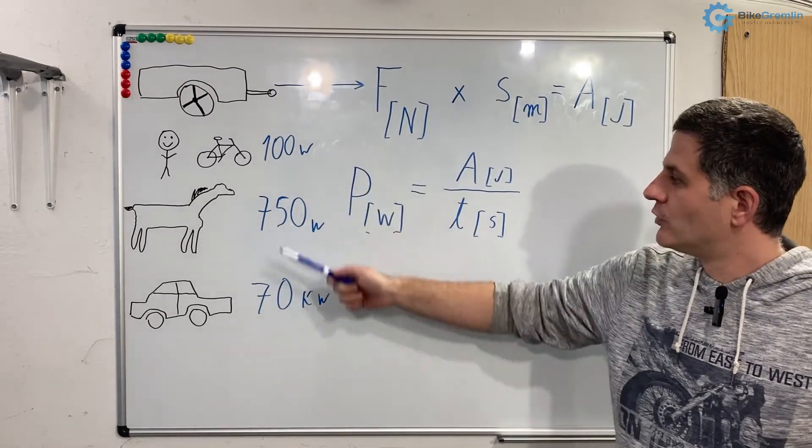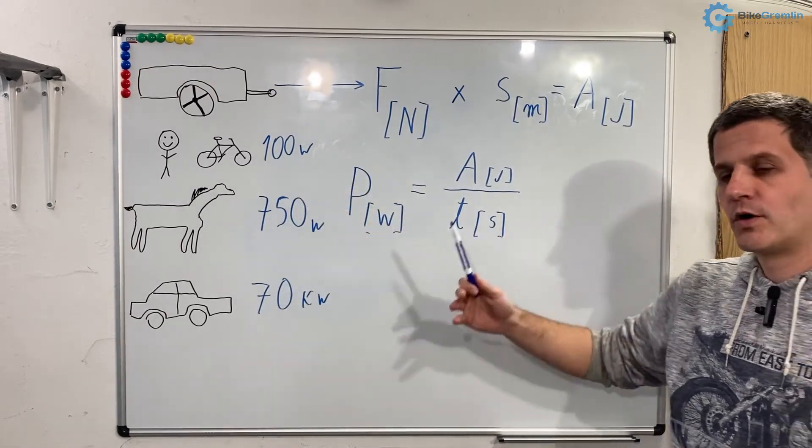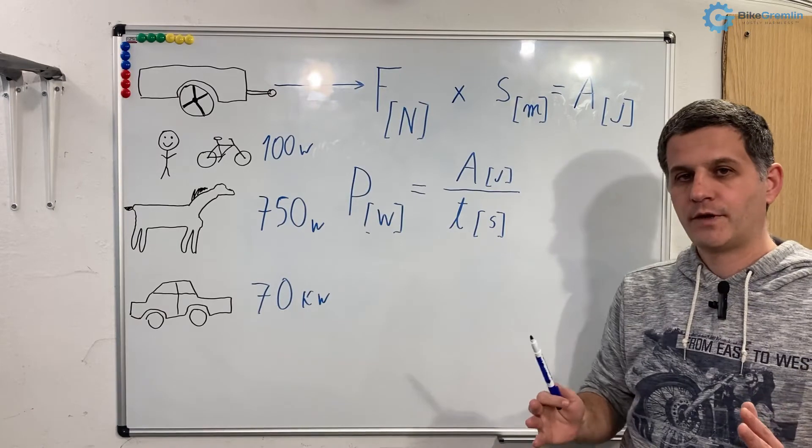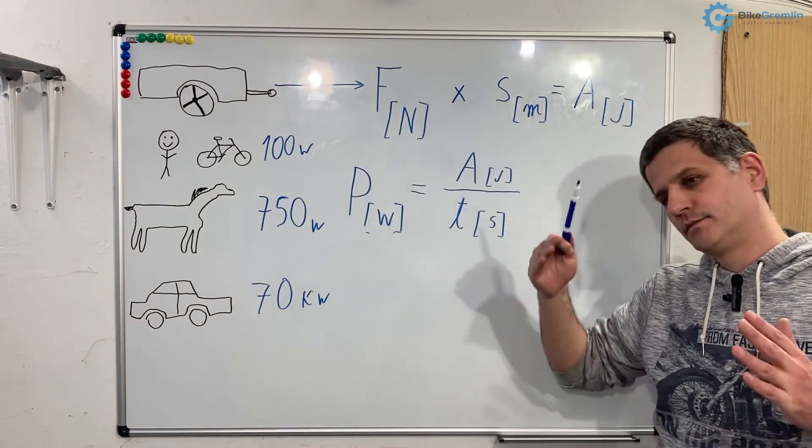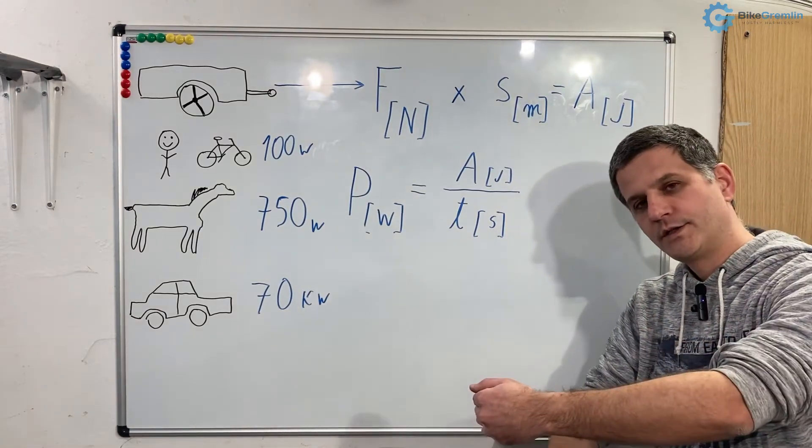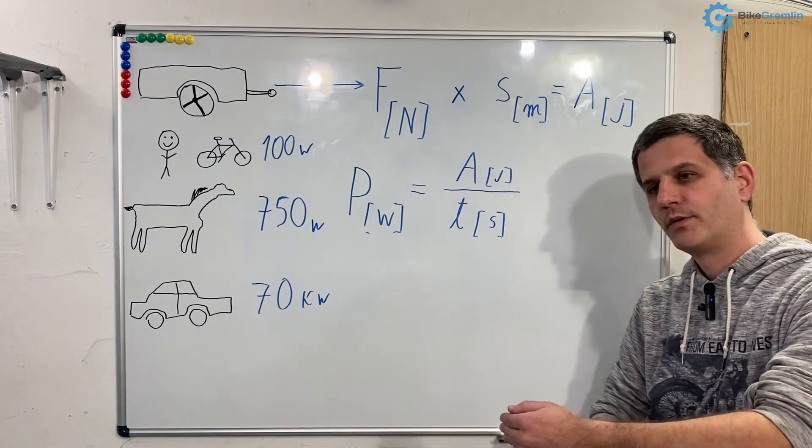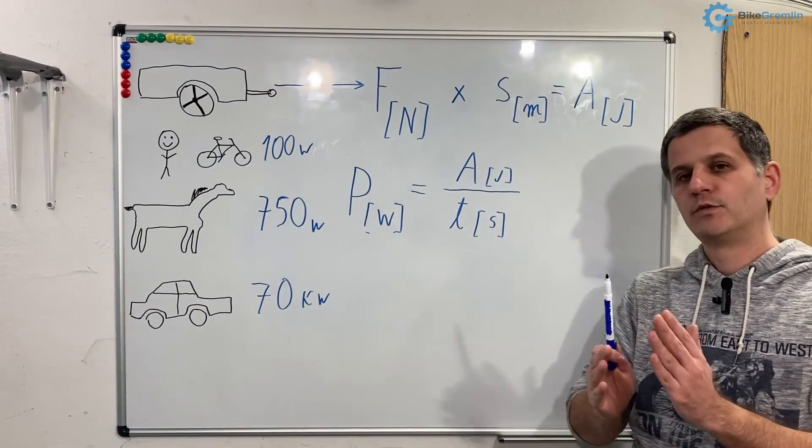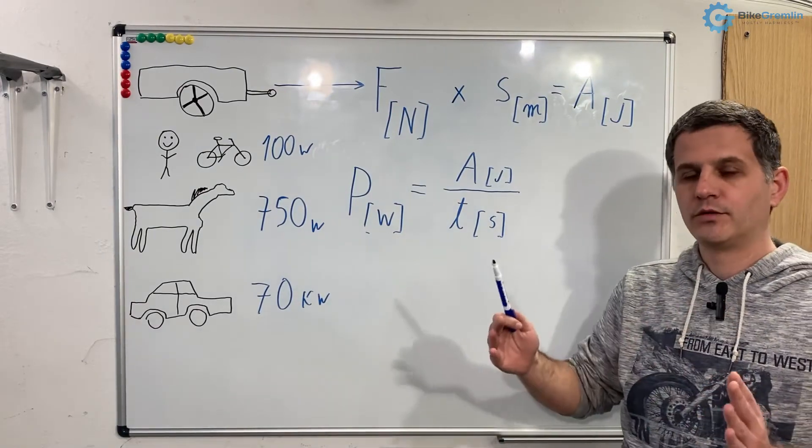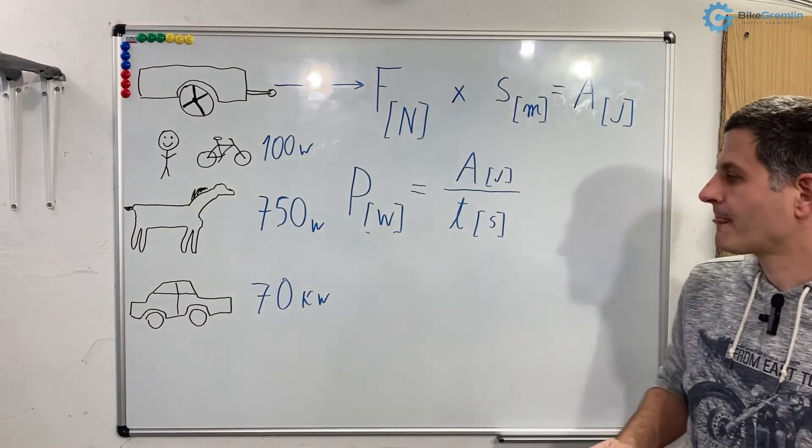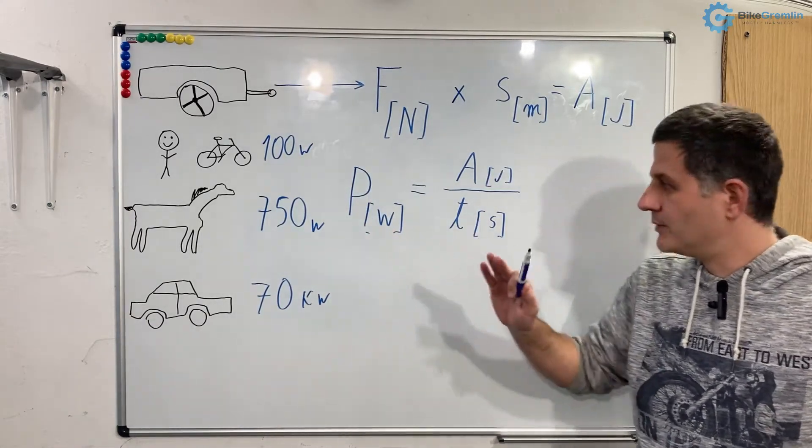So the more power we have the more work we can do within the same time frame, or looking at it from another angle, the more power we have the less time it will take us to do the same amount of work. That is the basics.